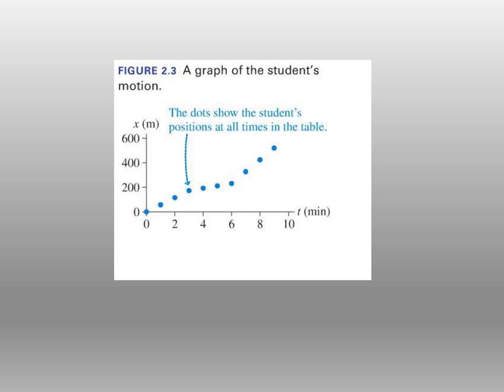This is another graph showing the student's motion. If you go back and plot all those points from the previous table, this is the graph that you will get.